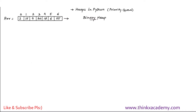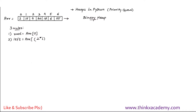To construct this binary heap, we have three rules. The first rule says the root of the binary tree will be equal to array[0]. The second rule says the left child position is 2*i + 1, where i is the index of the current node whose left child we want to find.